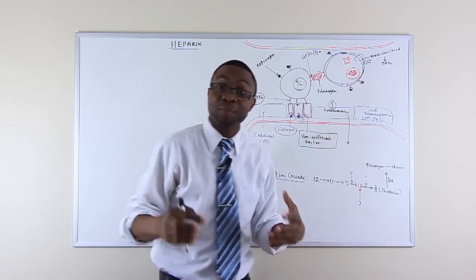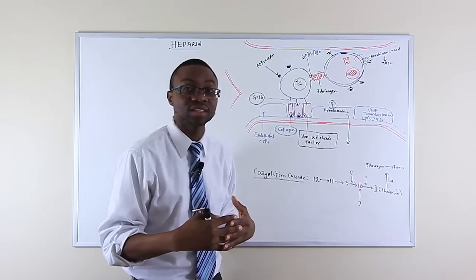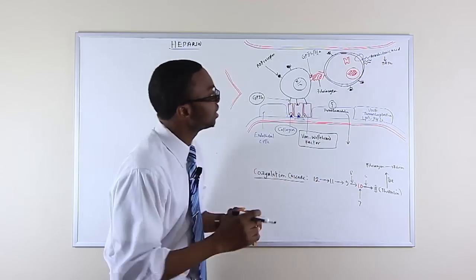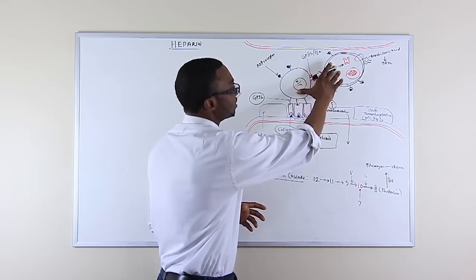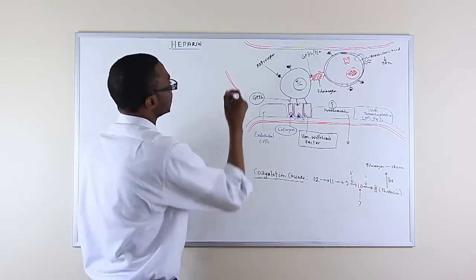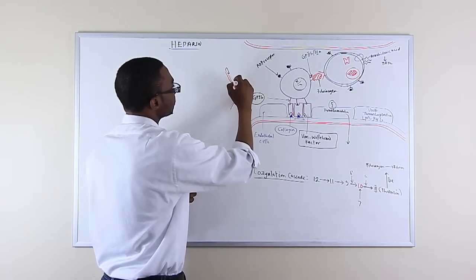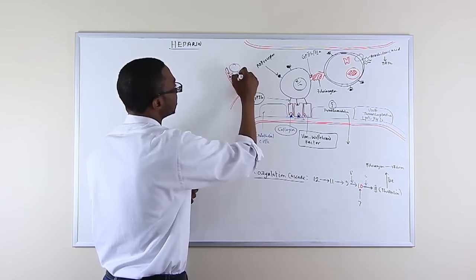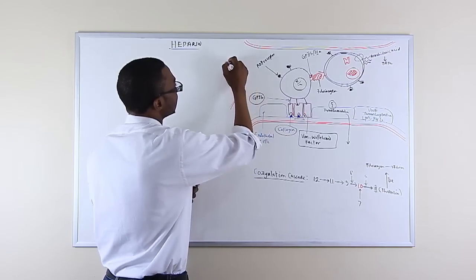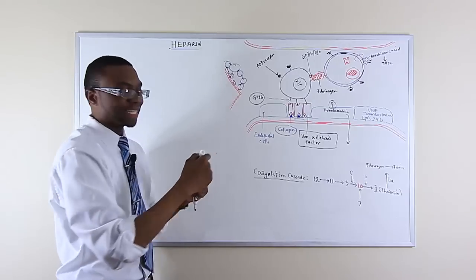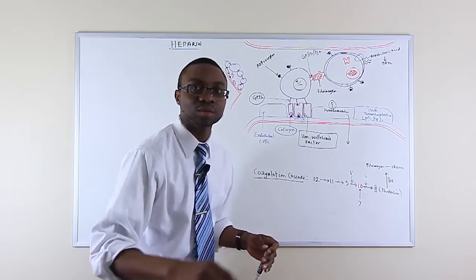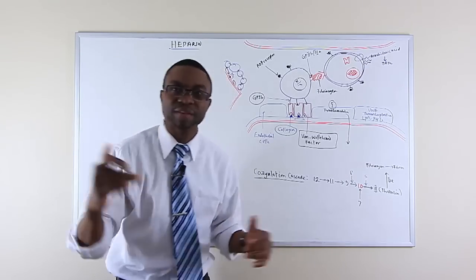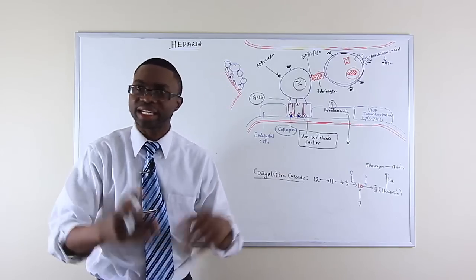Thromboxane A2 also allows for platelet aggregation. So thromboxane A2 and adenosine diphosphate both help platelets come together. The end result is a bunch of platelets stuck together — this is the primary hemostatic plug. It's not stable, so we need a huge mesh to stack on top of it to keep it strong, so that turbulent blood flow doesn't push the platelet debris away and cause bleeding again.